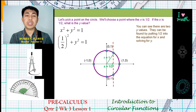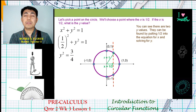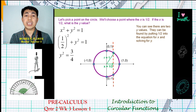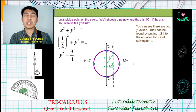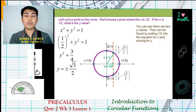Since we know x equals 1/2, substituting into the equation gives (1/2)² + y² = 1. Simplifying, 1/4 + y² = 1, so y² = 3/4. Therefore y equals positive or negative √3/2.